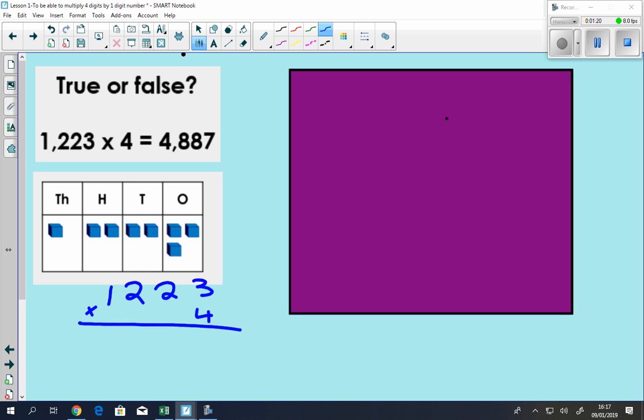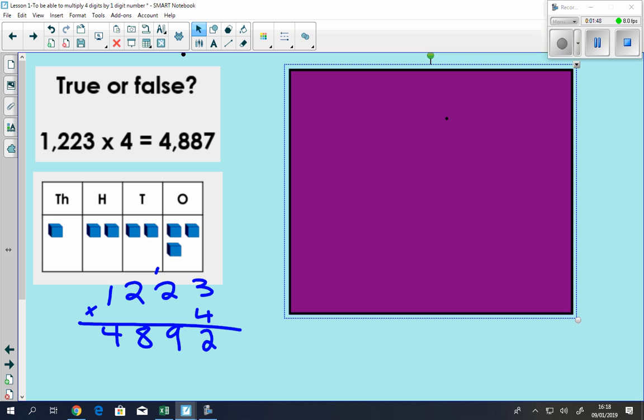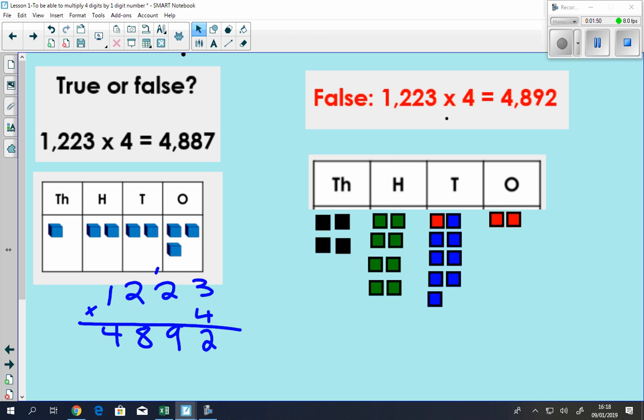4 multiplied by 3 is 12, so it's 2, and we put our 10 here. So 4 multiplied by 2, which is actually the same as 4 multiplied by 20 in this case. 4 multiplied by 20 is 80 plus 10, that one on top is 90. So our 9 goes here. And then 4 multiplied by 2 again, which is actually 4 multiplied by 200, is 800. And then 4 multiplied by 1 is 4, which is actually 4 multiplied by 1,000, which is 4,892, which you can see here.